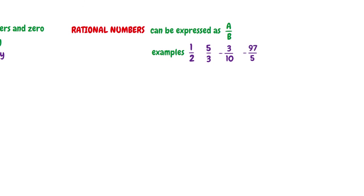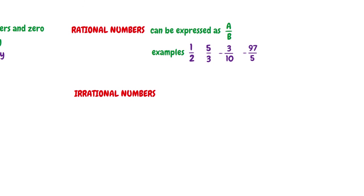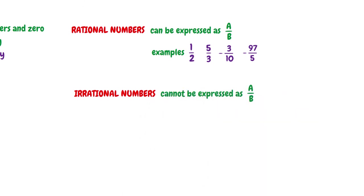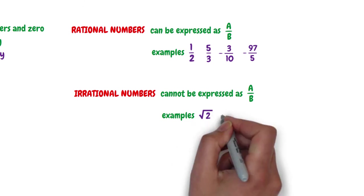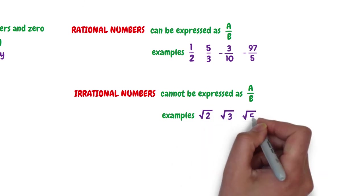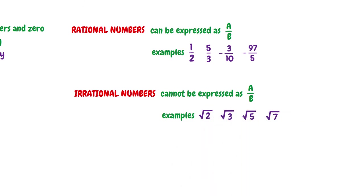The seventh set of numbers is the irrational numbers. These are a set of numbers that cannot be expressed as A over B. Examples of irrational numbers include the square root of 2, square root of 3, square root of 5, square root of 7, and pi.